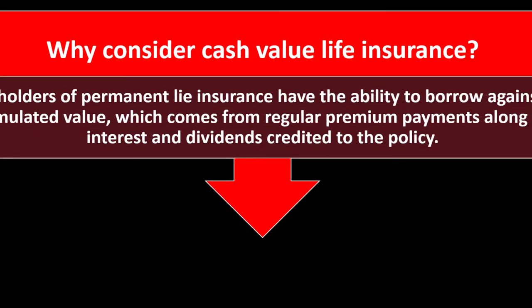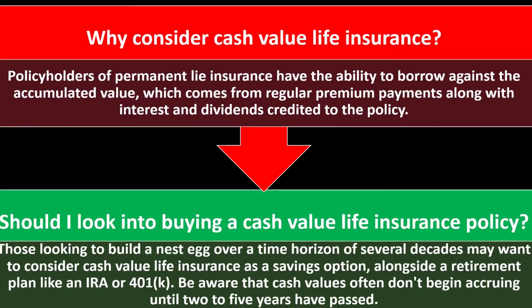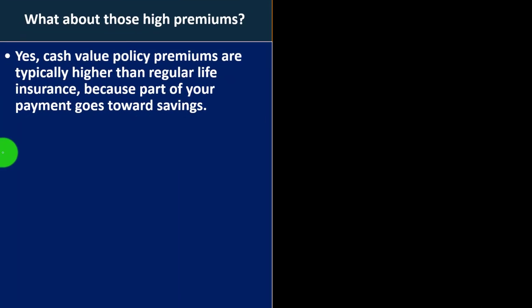Why consider cash value life insurance at all? Policyholders of permanent life insurance have the ability to borrow against the accumulated value, which comes from regular premium payments along with interest and dividends credited to the policy. Those looking to build a nest egg over several decades may want to consider cash value life insurance alongside a retirement plan like an IRA or 401k. Be aware that cash values often don't begin accruing until two to five years have passed. Cash value policy premiums are typically higher than term insurance because part of your payments are going towards savings.